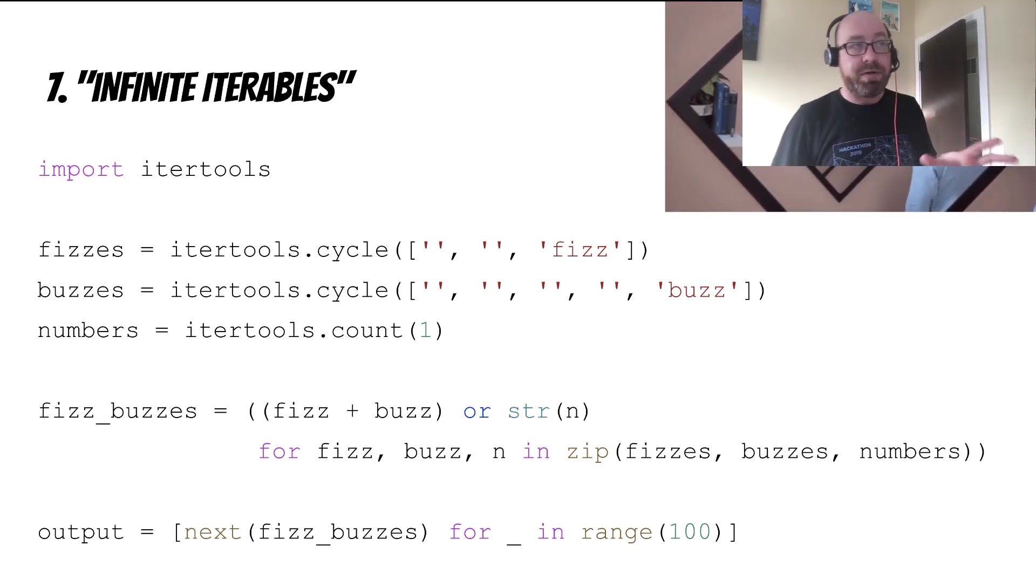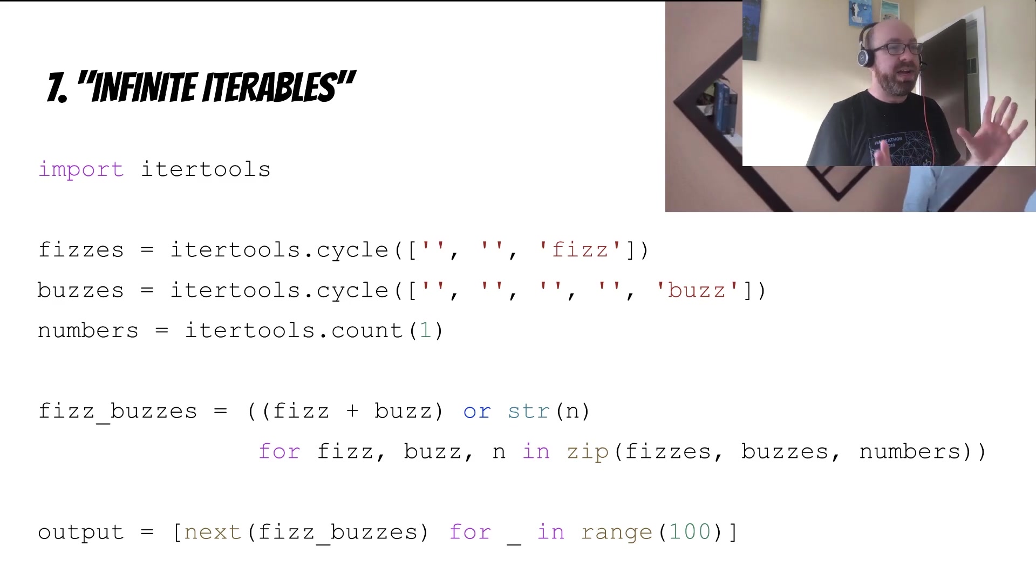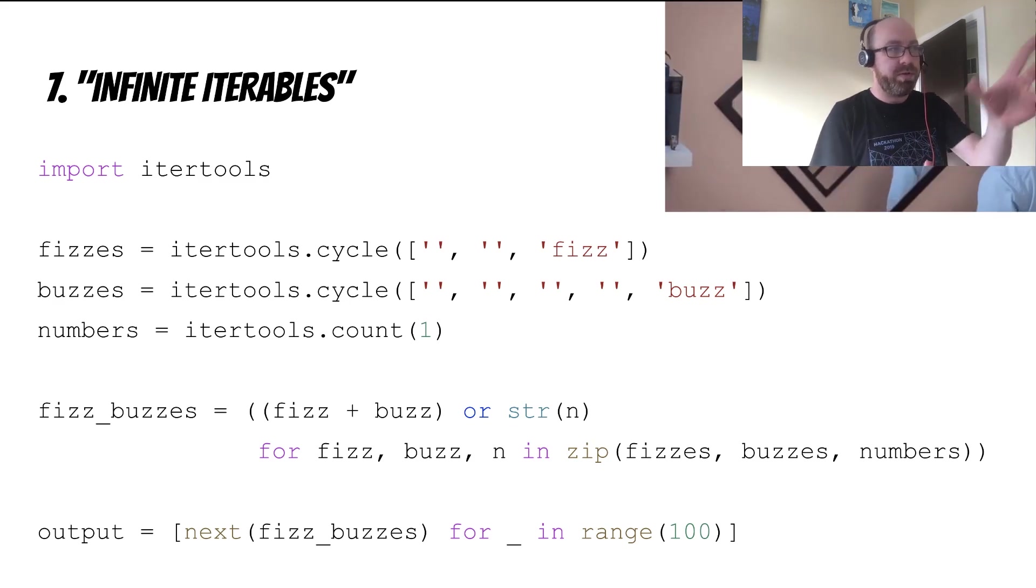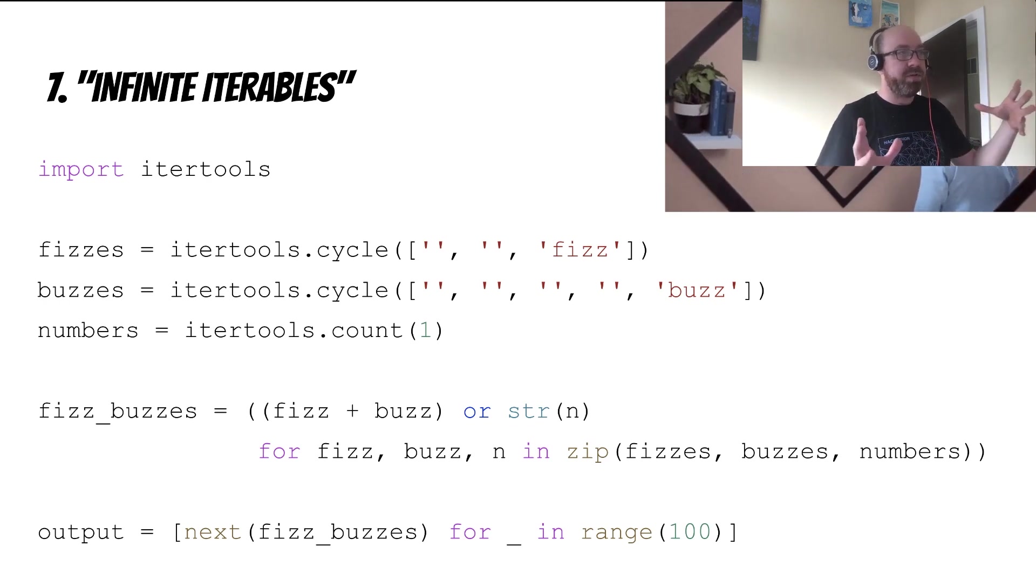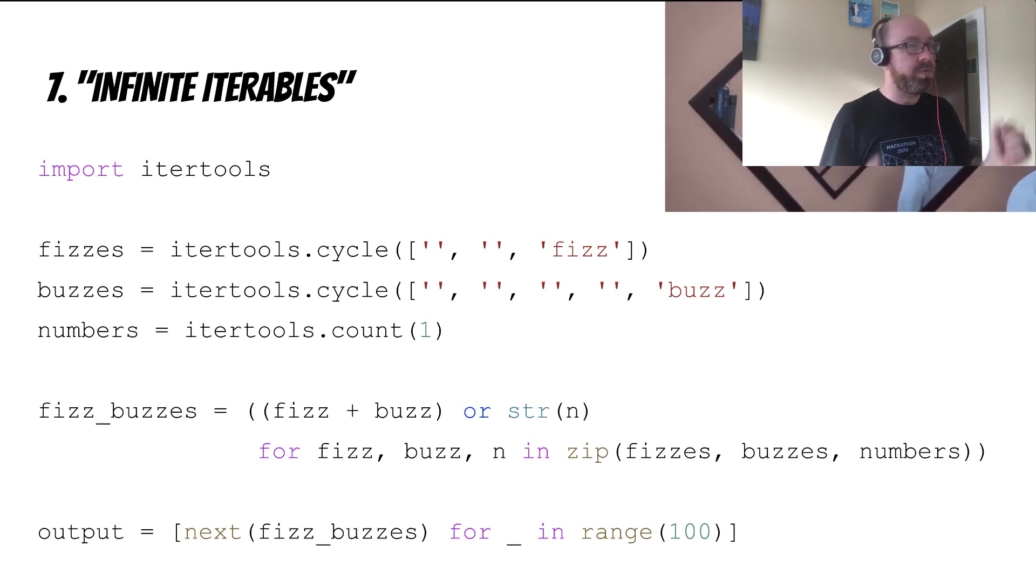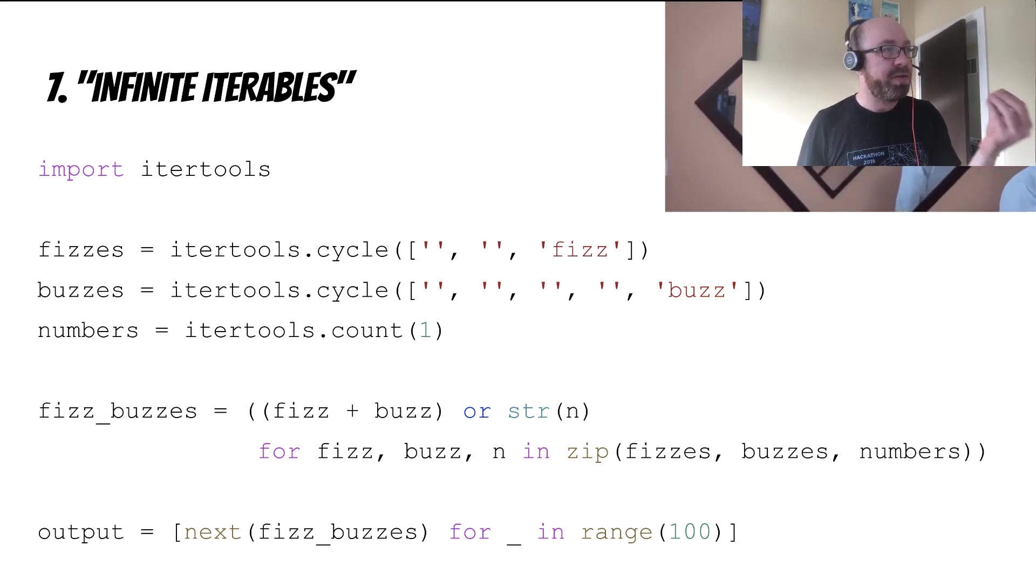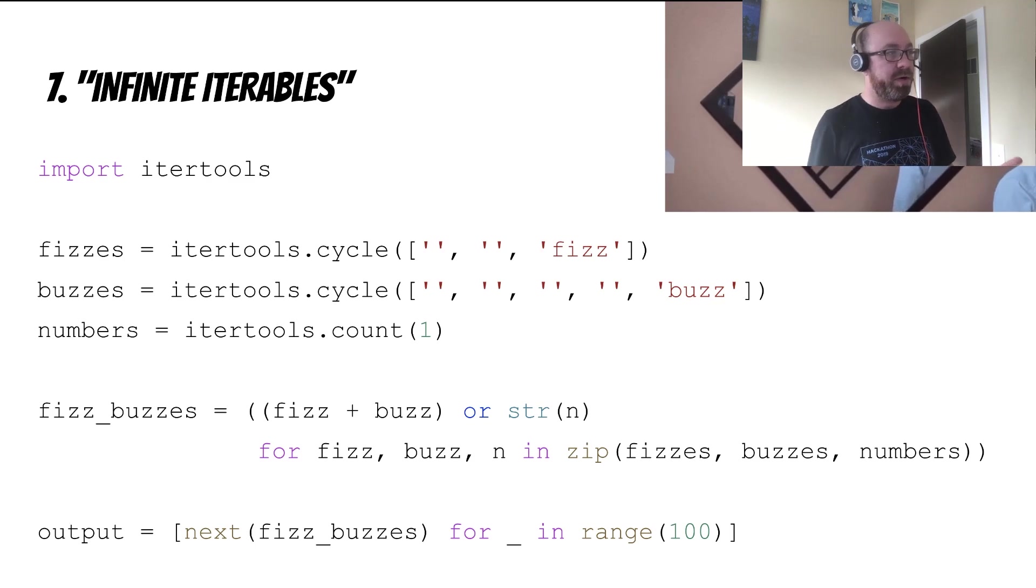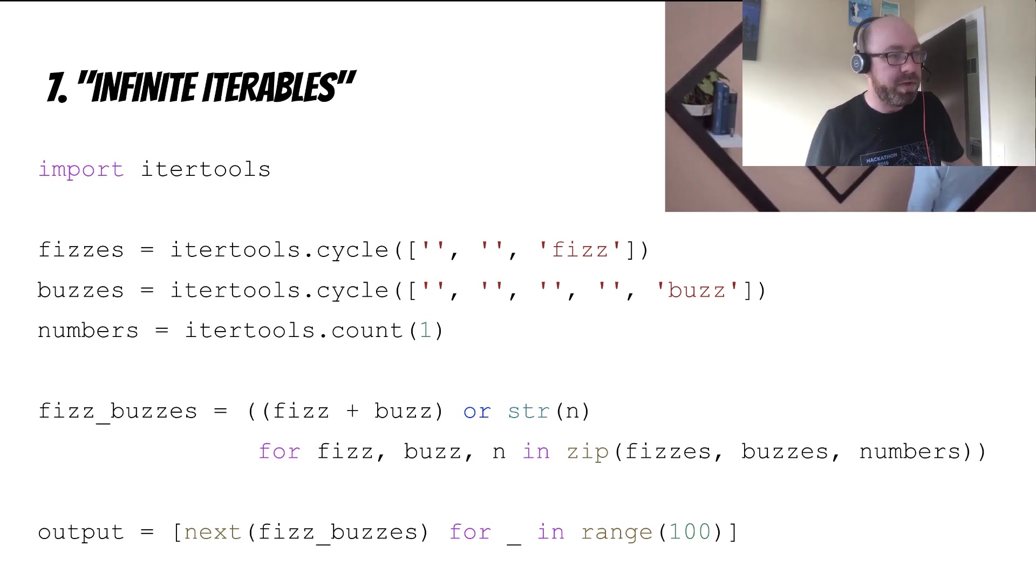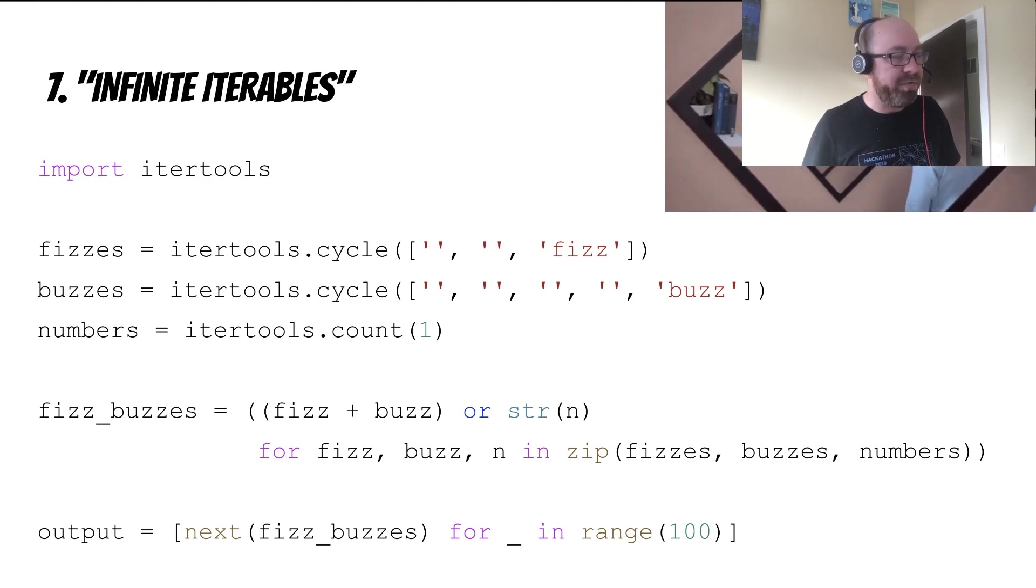This one is another of my favorites. In fact, this one might be my overall favorite. It's extremely elegant. It uses no numbers other than there's a 1 in 100. It uses no modulus operator, no checking for divisibility. It's pure itertools, and I love itertools. Stare at this and bask in how elegant itertools makes the solution to this problem. It's pretty great. This is probably my favorite.